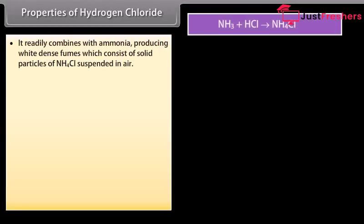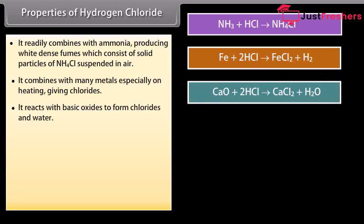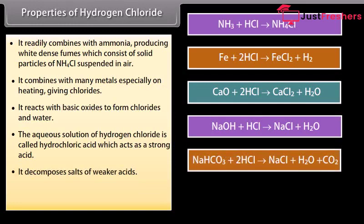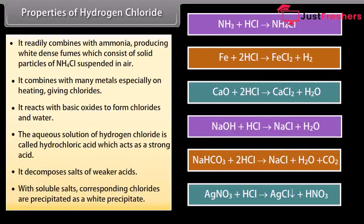Hydrogen chloride readily combines with ammonia producing white dense fumes, which consist of solid particles of NH4Cl suspended in air. It combines with many metals especially on heating, giving chlorides. It reacts with basic oxides to form chlorides and water. The aqueous solution of hydrogen chloride is hydrochloric acid, which acts as a strong acid. It decomposes salts of weaker acids; with soluble salts, corresponding chlorides are precipitated as a white precipitate.